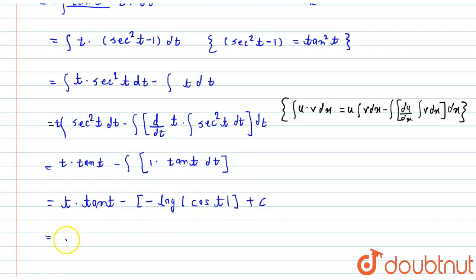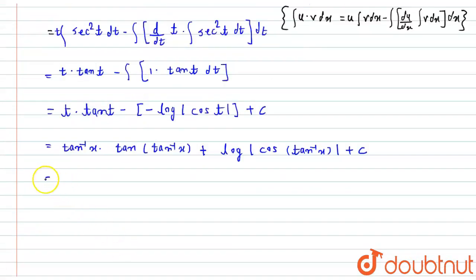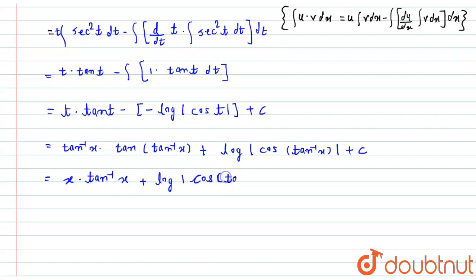Now substituting back t equals tan inverse of x: it becomes tan inverse of x times tan of (tan inverse of x), plus log of mod of cos of (tan inverse of x), plus c. The tan and tan inverse cancel, so it simplifies to: x times tan inverse of x, plus log of mod of cos of (tan inverse of x), plus c.